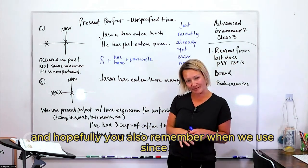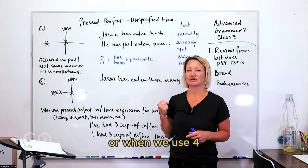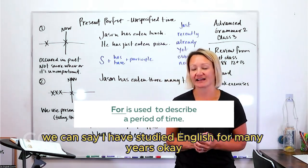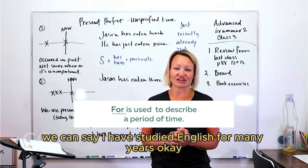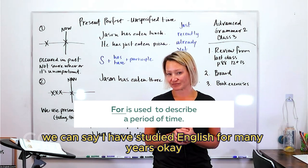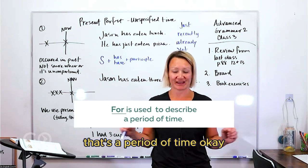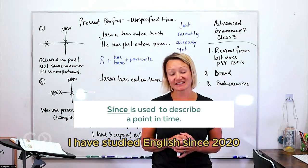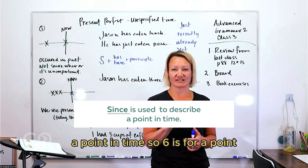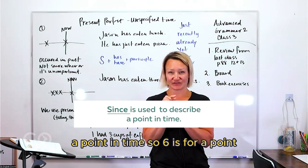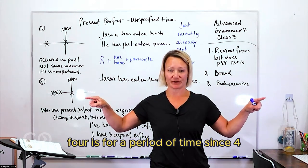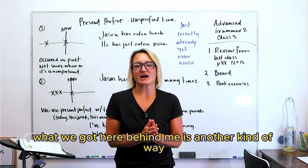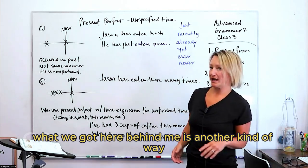In our last class we talked about the present perfect plus 'since' or 'for.' Remember when we use 'since' versus 'for' — there are two different scenarios. For example: 'I have studied English for many years' — that's a period of time. 'I have studied English since 2020' — that's a point in time. So 'since' is for a point in time and 'for' is for a period of time.